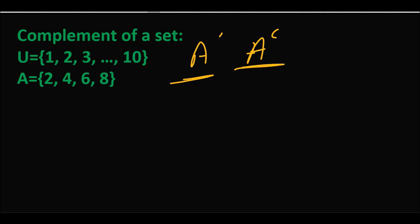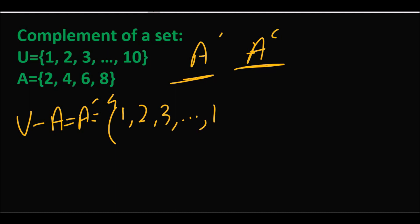Complement میں ہم لوگ کرتے یہ ہیں کہ جس set کا بھی complement لینا ہوتا ہے اس کو universal set میں سے minus کر لیتے ہیں۔ جو set minus کیا وہ نہیں لکھا جاتا بلکہ جو remaining رہ جاتا ہے وہ لکھا جاتا ہے۔ اگر ہمیں A کا complement find out کرنا ہے تو ہم لکھیں گے: Universal set minus A = A complement۔ Universal set ہے {1, 2, 3, ..., 10}۔